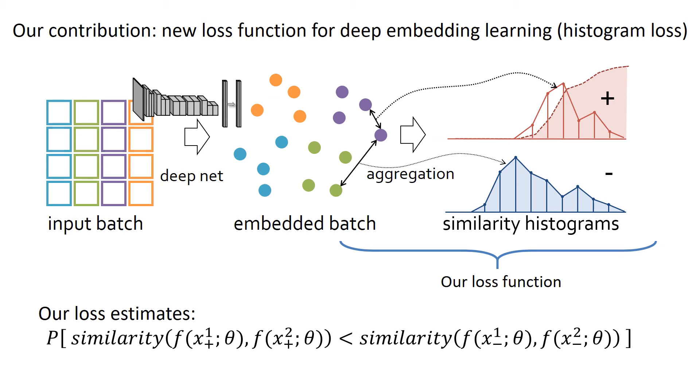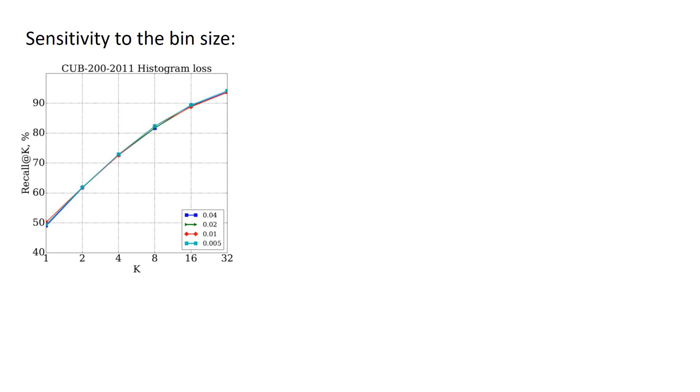We can therefore plug our loss into any batch stochastic gradient descent algorithm. The only parameter associated with our loss is the bin size of the histograms. Fortunately, our experience suggests that the quality of the resulting embeddings is not sensitive to this parameter. Thus, our loss has a very attractive property of not having any parameters that it is sensitive to.